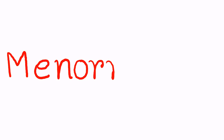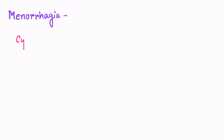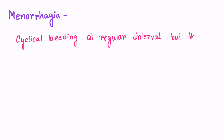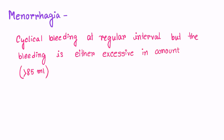Today our topic is Menorrhagia. Menorrhagia is defined as cyclic bleeding at regular intervals, but the bleeding is either excessive in amount — that is more than 85 ml — or in duration — that is more than 7 days — but the cycle is regular.